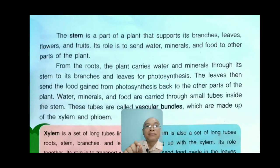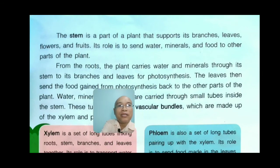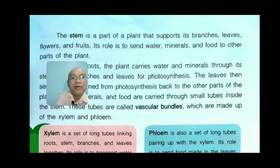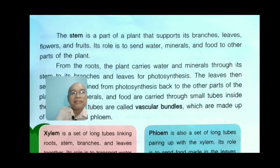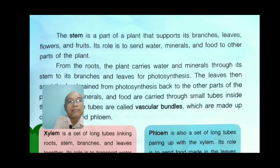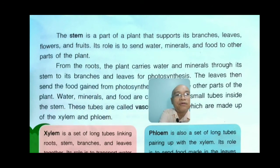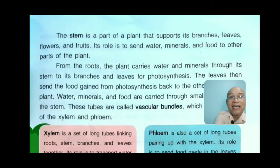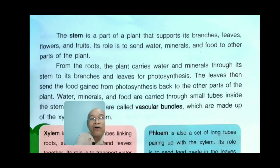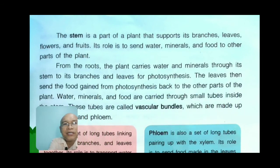Now let's talk about stems. The stem is the part of a plant that supports its branches, leaves, flowers, and fruits. Its role is to send water, minerals, and food to the other parts of the plant. From the roots, the plant carries water and minerals through its stem to its branches and leaves for photosynthesis.